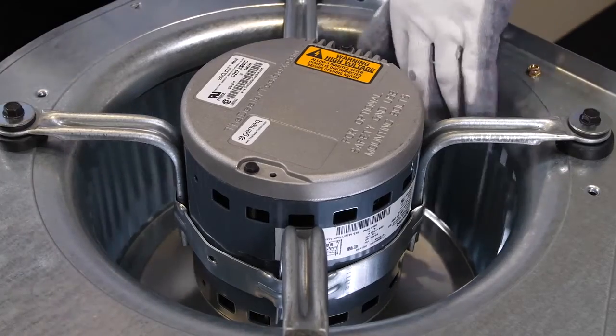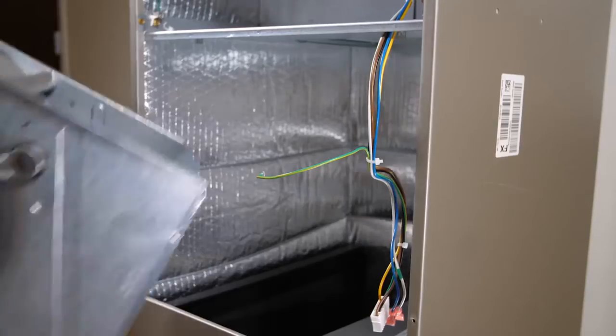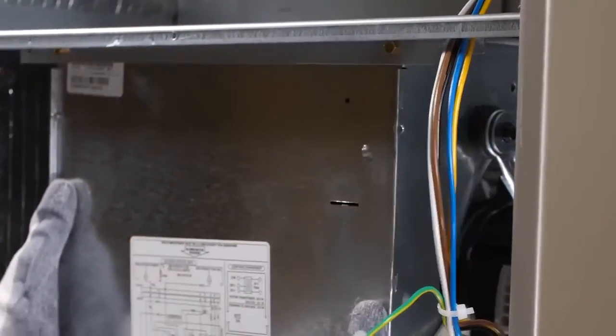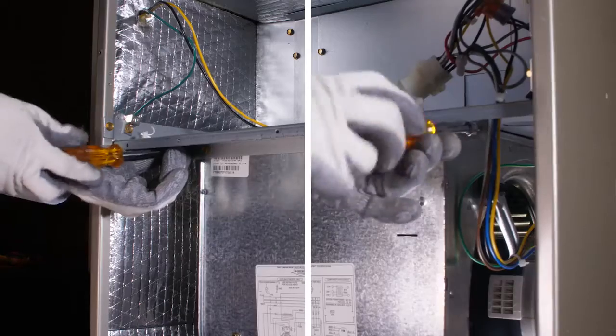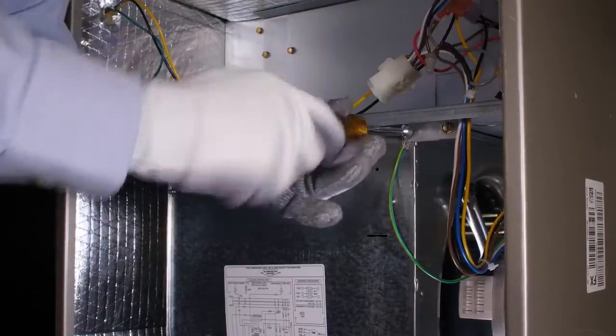Check to see if the blower wheel spins freely. If not, the new control module is defective. Slide the blower housing back into the unit. Insert the two screws to the housing bracket. Insert the screw holding the ground wire.